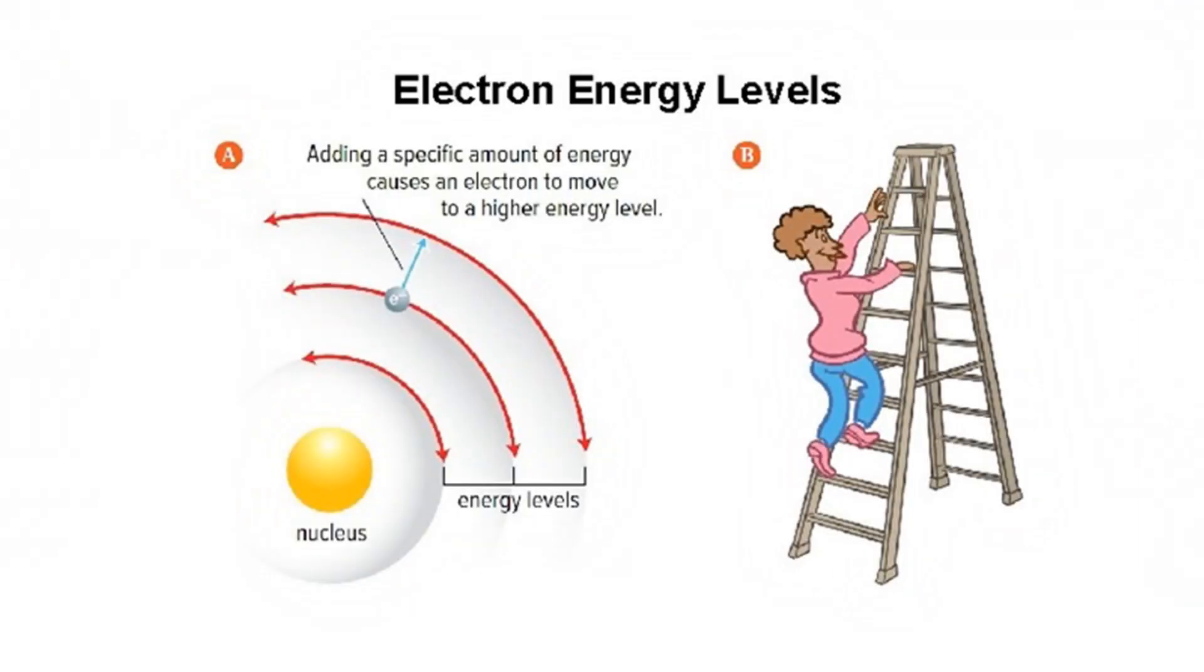The fixed energy levels of electrons are analogous to the rungs of a ladder. The lowest rung of the ladder corresponds to the lowest energy level. A person can climb up or down a ladder by going from rung to rung. Similarly, an electron can jump from one energy level to another. A person on a ladder cannot stand between the rungs. Similarly, the electrons in an atom cannot exist between energy levels.